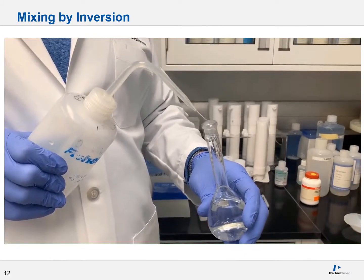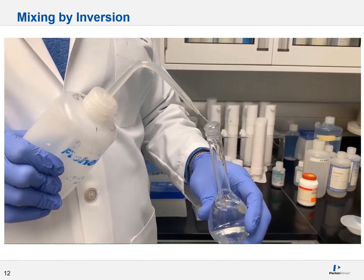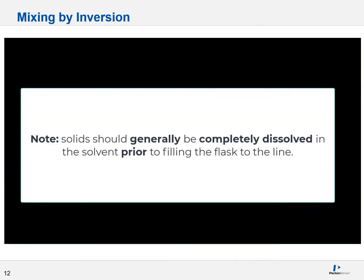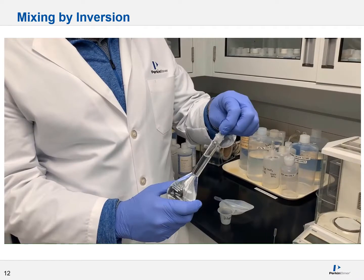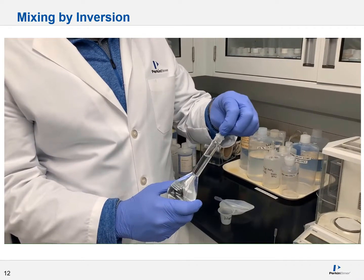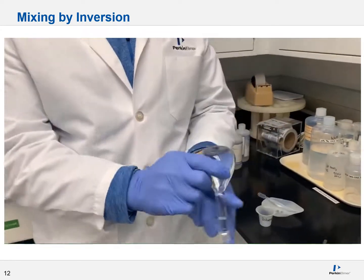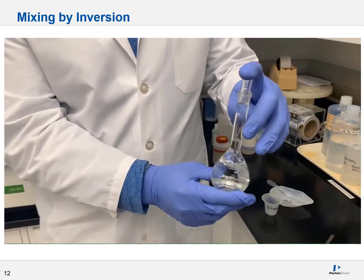To mix by inversion, first, fill your vessel up to the desired level with your solvent. After this, stopper or secure your vessel as needed, and then flip the vessel upside down and give it a good shake to ensure that your solute has been dissolved.